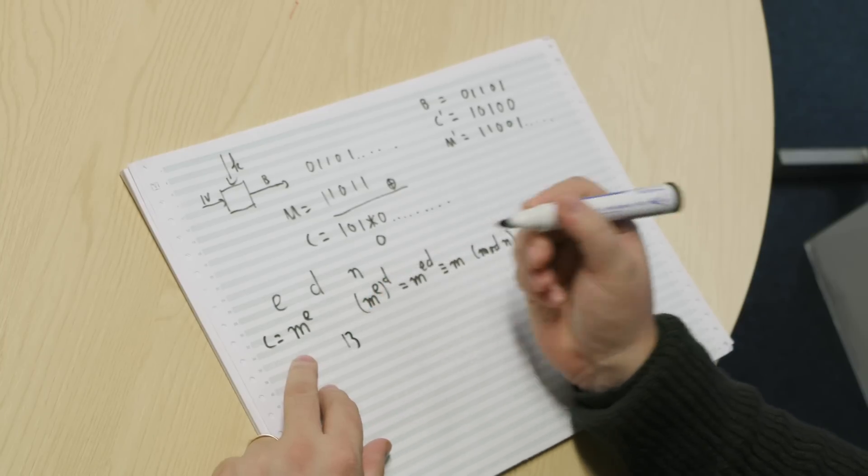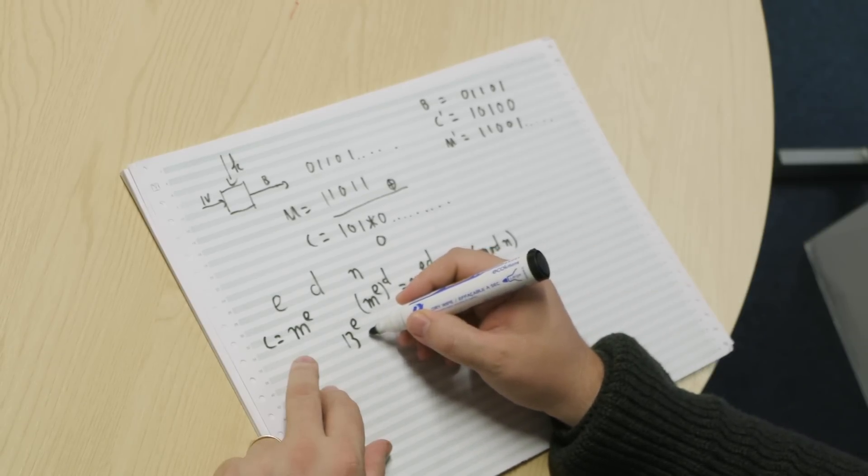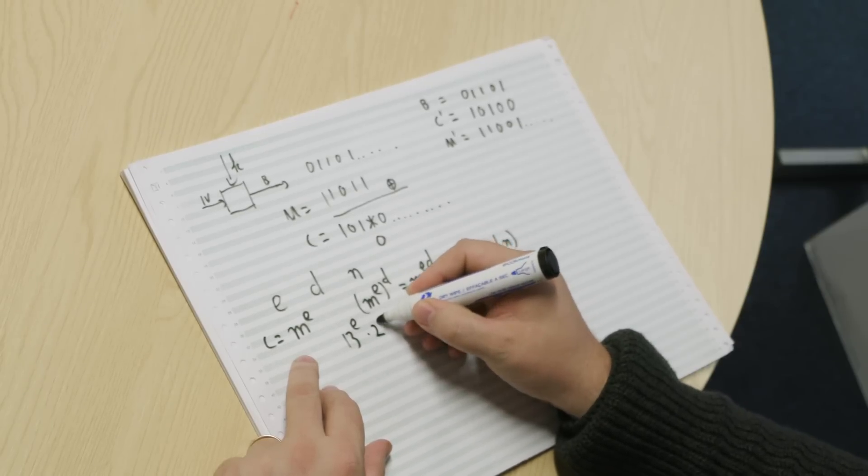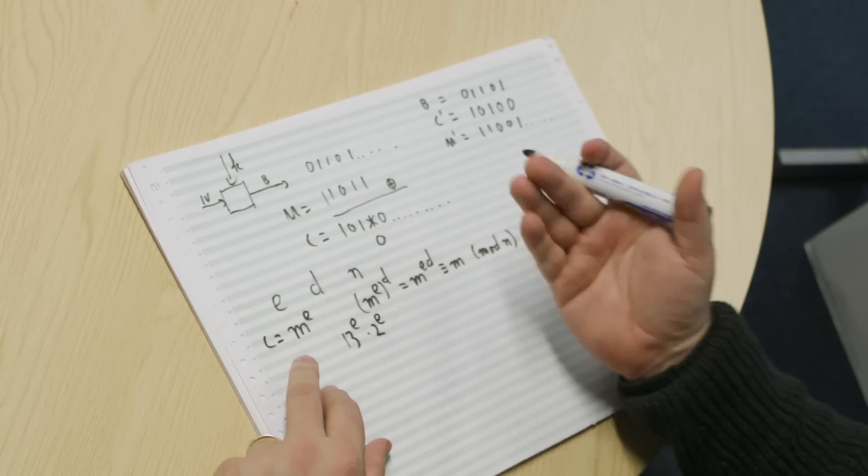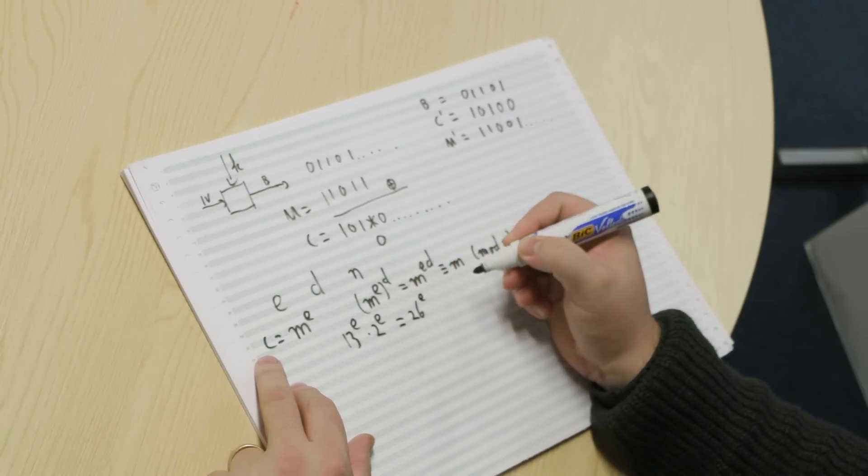And this is what they need to do, right? You're sending me the number 13 to the power e mod n. You want to send in 26 to the power e, so you need to multiply this by 2 to the power e, e being a public value, so you can just compute to the power e. And of course, this is equal to 26 to the power e.